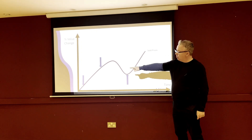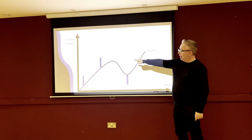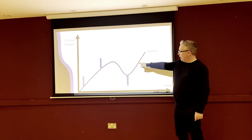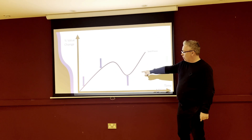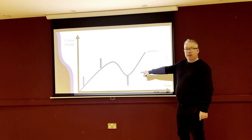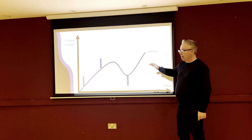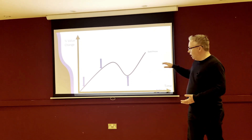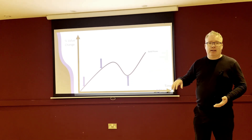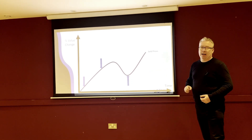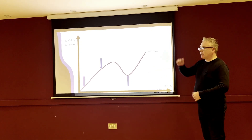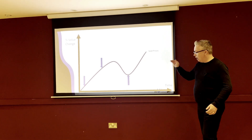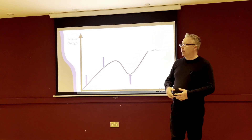A market will grow, it will start to reach a peak where there's risk, then it will dip occasionally, and then it will go again. That curve can happen over long or short periods of time. It can be steep and it can be shallow, but that curve is always observed in data.